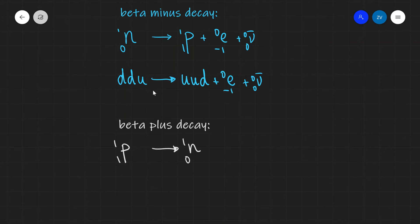We can also have beta plus decay, which turns a proton into a neutron. In order to balance this, because the charge on the left is one, we'll also need a charge after the decay to be also one.